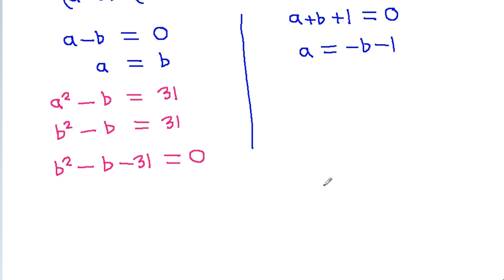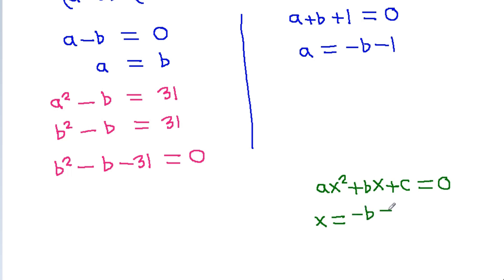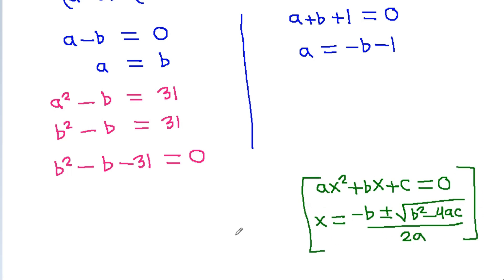For the quadratic equation ax squared plus bx plus c equals 0, we use the formula x equals minus b plus or minus square root of b squared minus 4ac, all divided by 2a. Here, a is 1, b is minus 1, and c is minus 31.